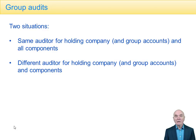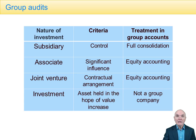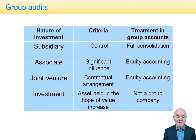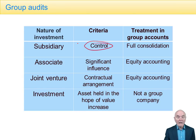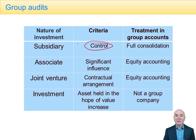We'll have to ask the component auditors for certain information required for the consolidation process. The first thing we ought to do when considering group audits is to determine the nature of the group — what sort of investments has the holding company made. The highest level of investment would be investing in a company to make it a subsidiary, and the test for that is control.